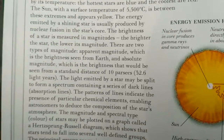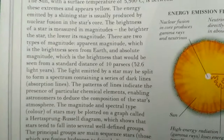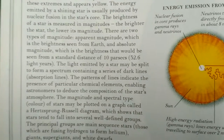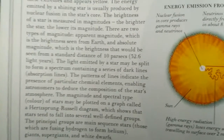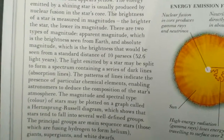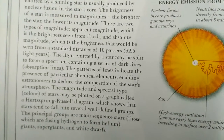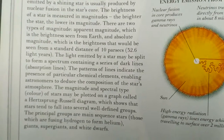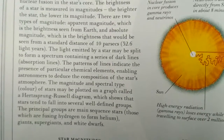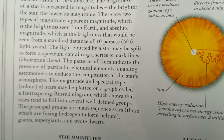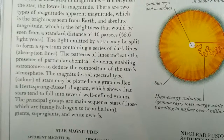That is 32.6 light years. The light emitted by a star may be split to form a spectrum containing a series of dark lines called absorption lines. The pattern of the lines indicates the presence of a particular chemical element, allowing astronomers to deduce the composition of the star's atmosphere.